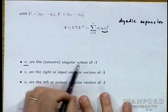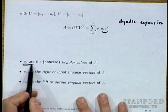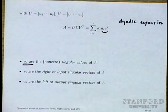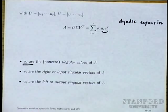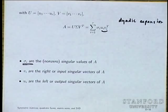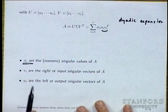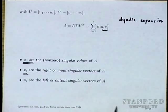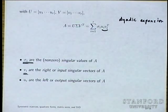The σ_i are the non-zero singular values of A. There is a bit of confusion about whether singular values can be zero — in the definition just given, the singular values are all positive, period. The V_i's are called the right or input singular vectors of A, and the U_i's are the left or output singular vectors of A.